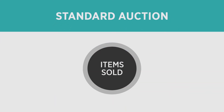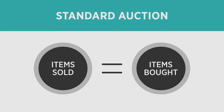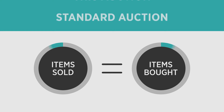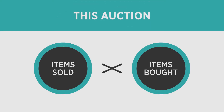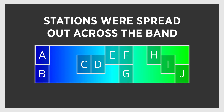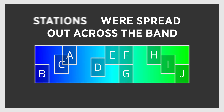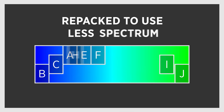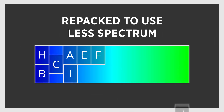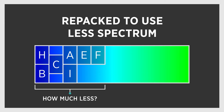In a standard auction, the items being sold are the same as the items being bought, but in this auction the process was not that simple. Stations were spread out across the band and needed to be reassigned or repacked to use less spectrum. How much less was unknown until stations indicated their willingness to participate. This is why repacking was critical to the auction.